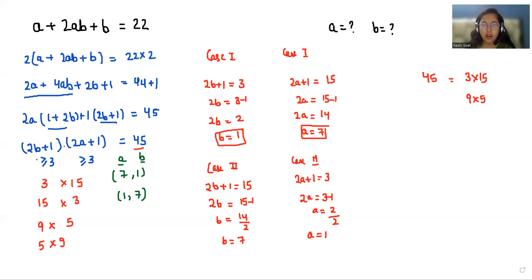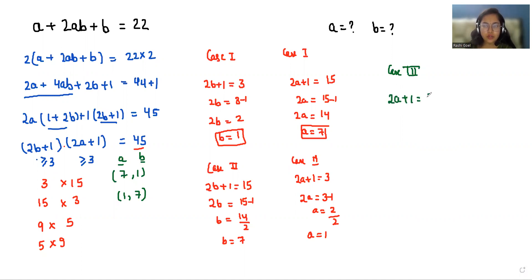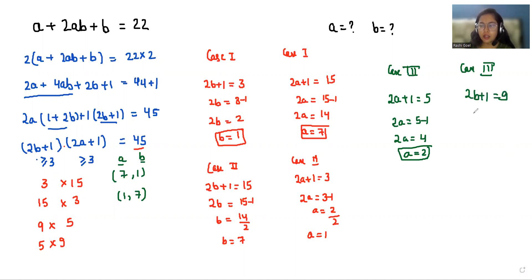Case 3: When 2a + 1 = 5, so 2a = 4 and a = 2. And 2b + 1 = 9, so 2b = 8 and b = 4. So the values are (a, b) = (2, 4).